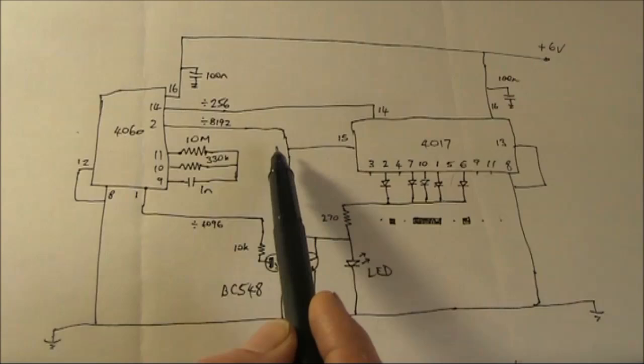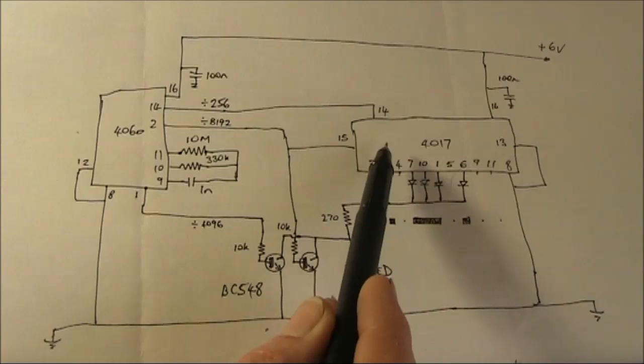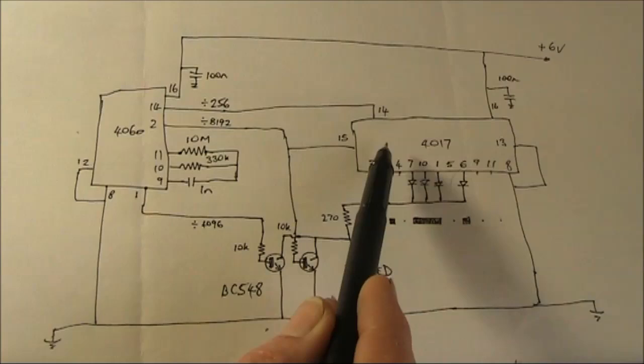The output from pin number two of the 4060 goes to two places. One of them is pin number fifteen of the 4017. That's the reset, and ensures that no matter what, it always starts here, and runs through the character that way.